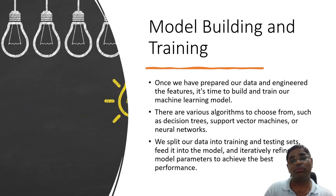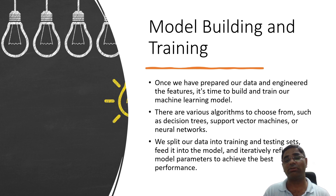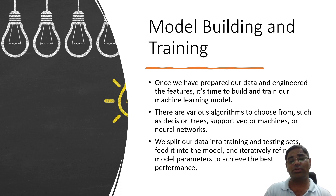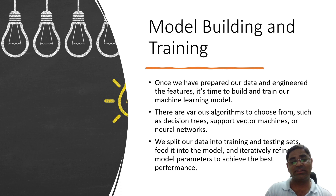The next step is Model Building and Training. Once we have prepared our data and engineered the features, it is time to build and train our machine learning model. There are various algorithms to choose from, such as decision trees, support vector machines, neural networks, Random Forest, or KNN. We split our data into training and testing sets, feed it into the model, and iteratively refine the model to achieve the best performance.